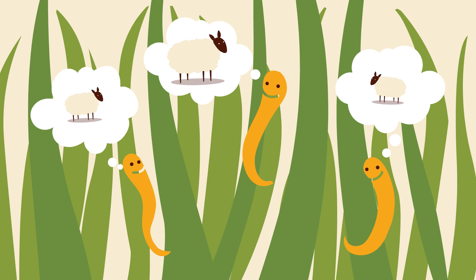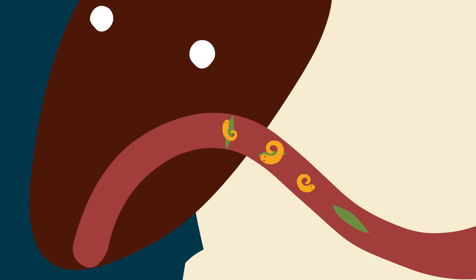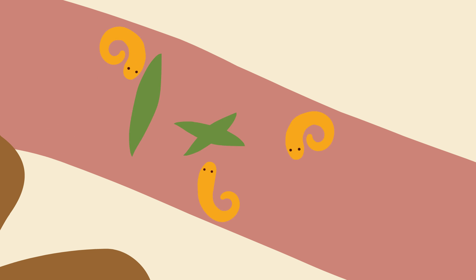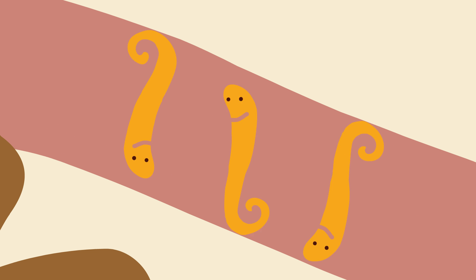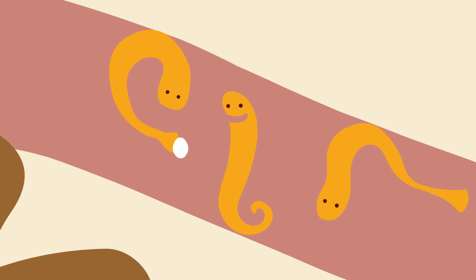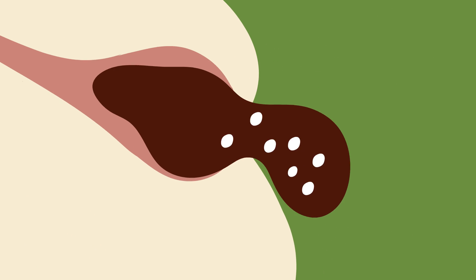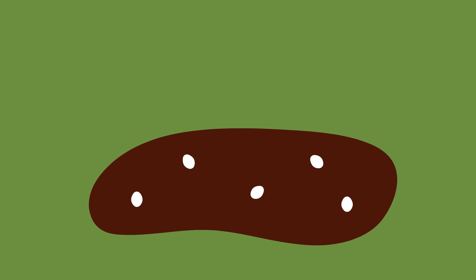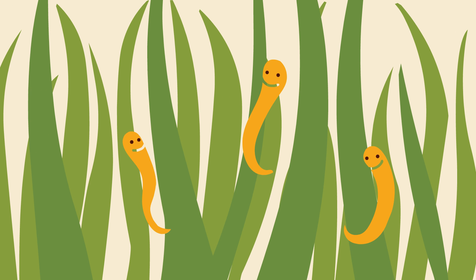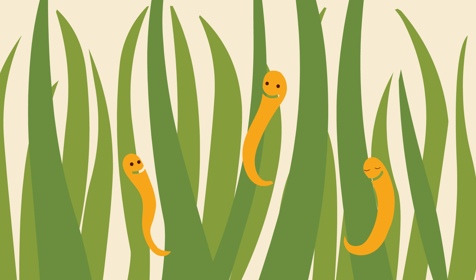Once the infective larvae are ingested by the preferred host, they enter the gut where they mature and become adults. The adult worms mate and the females lay eggs, which are shed back onto the pasture in the faeces. The eggs hatch, the worms develop to the infective stage and wait to be ingested through grazing. This is the basic life cycle of parasitic worms.